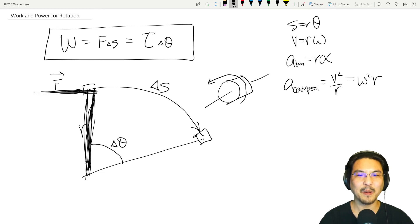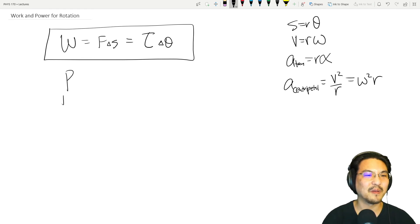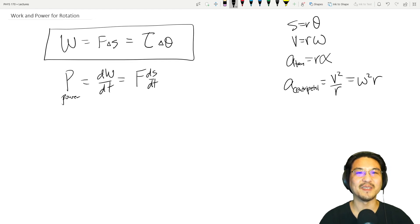And then power is just the time derivative of work. So recall if you take the time derivative of this with a constant force, then it'll look like ds/dt, which is velocity. So it looks like F·v—that's force, that's velocity, linear velocity.